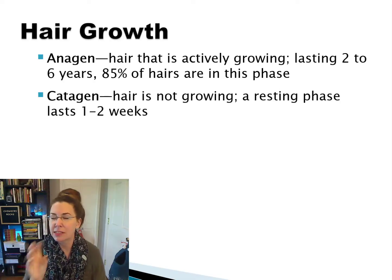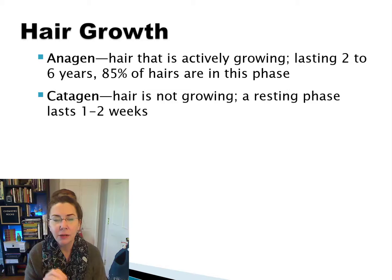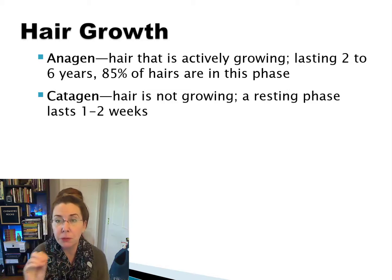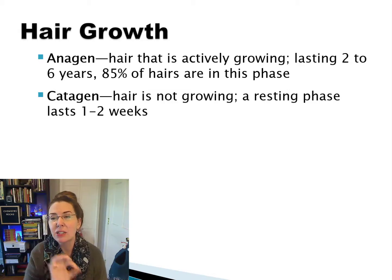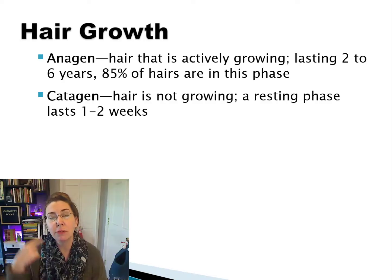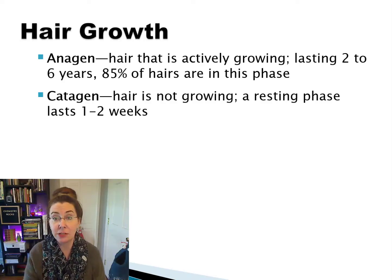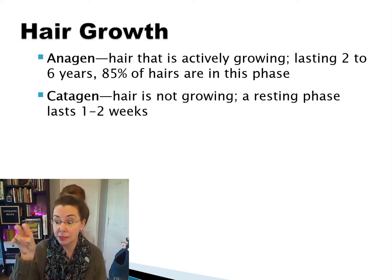Catagen is the next phase and also the shortest. It only lasts one to two weeks. It's a transitional resting phase for that hair before it enters into telogen, or the death phase.